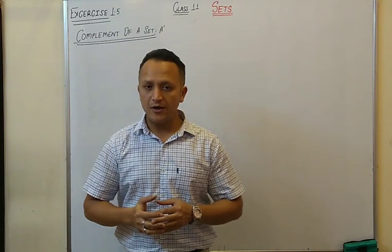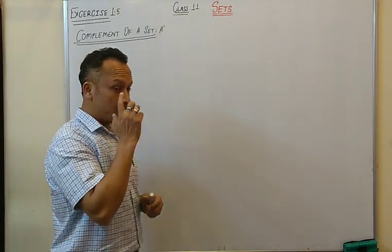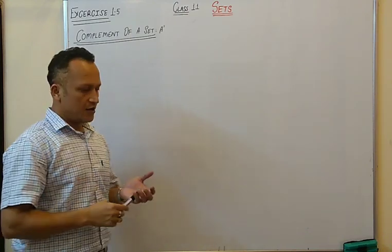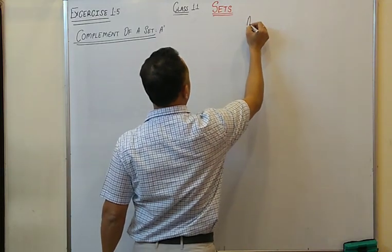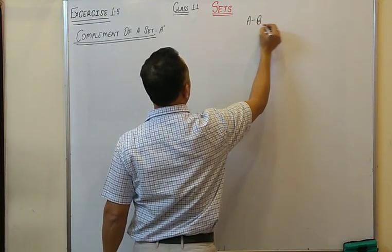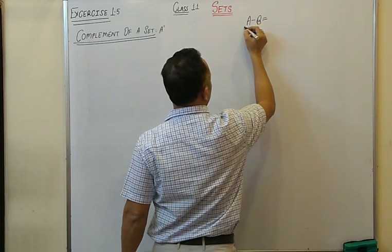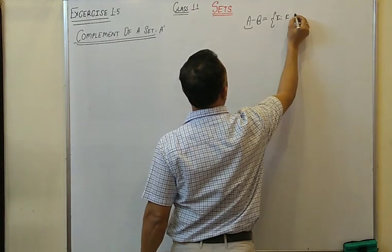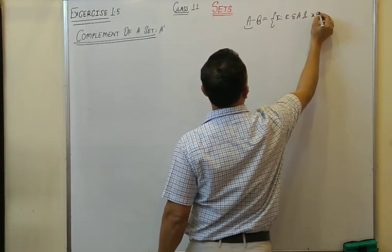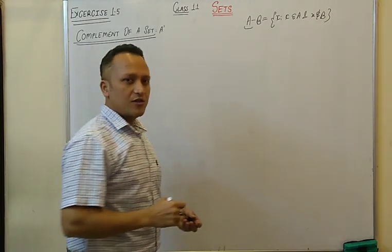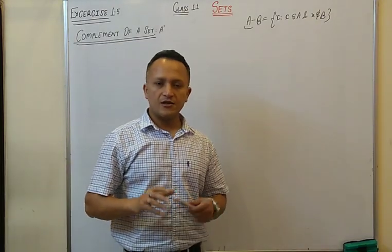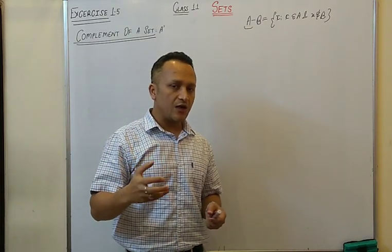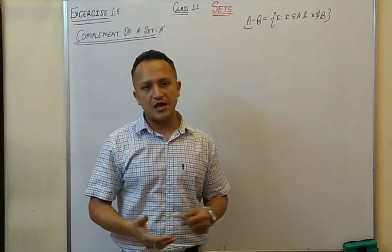Now what do you mean by the complement of a set? To understand this, you have to revise the last lecture on subtraction of sets. In the last lecture, A minus B was defined as: x such that x belongs to A and x does not belong to B. So in A minus B, the elements common to both A and B are discarded from A.